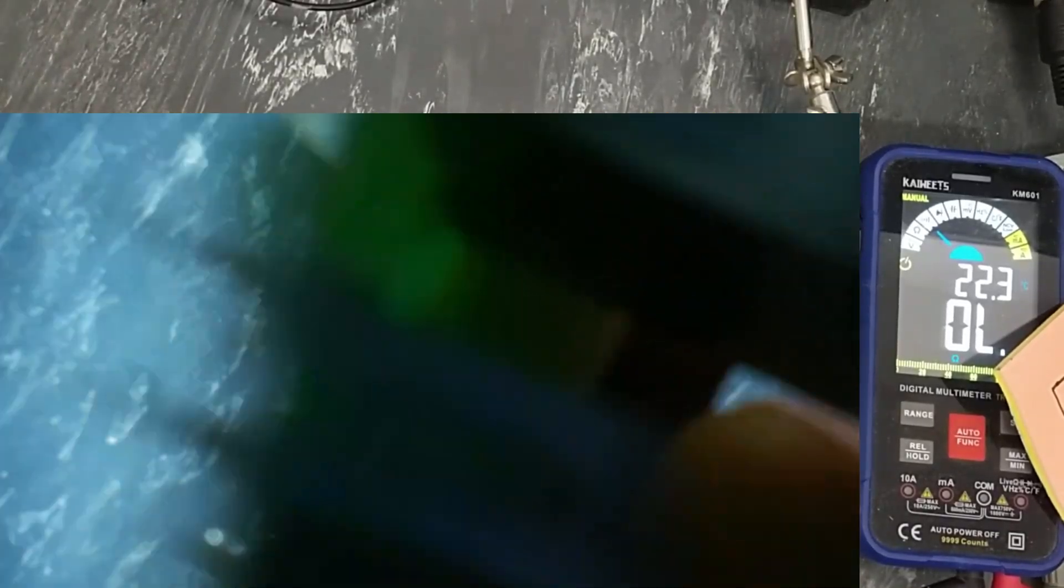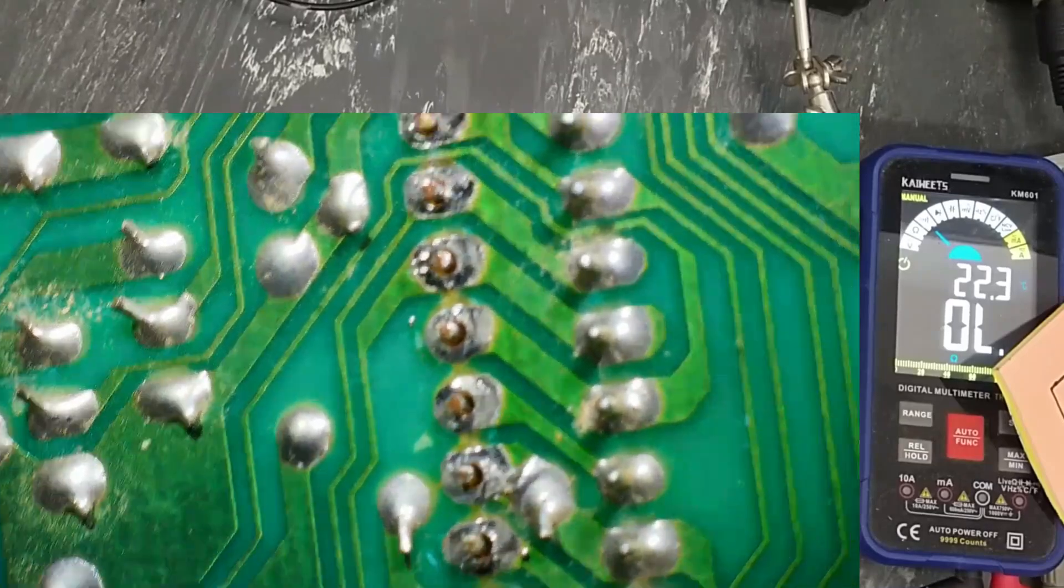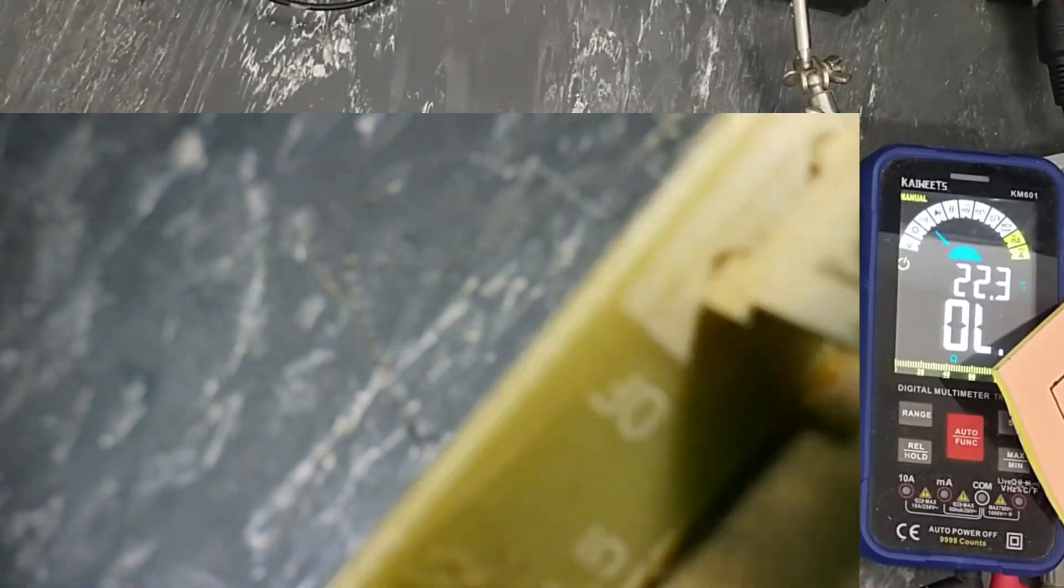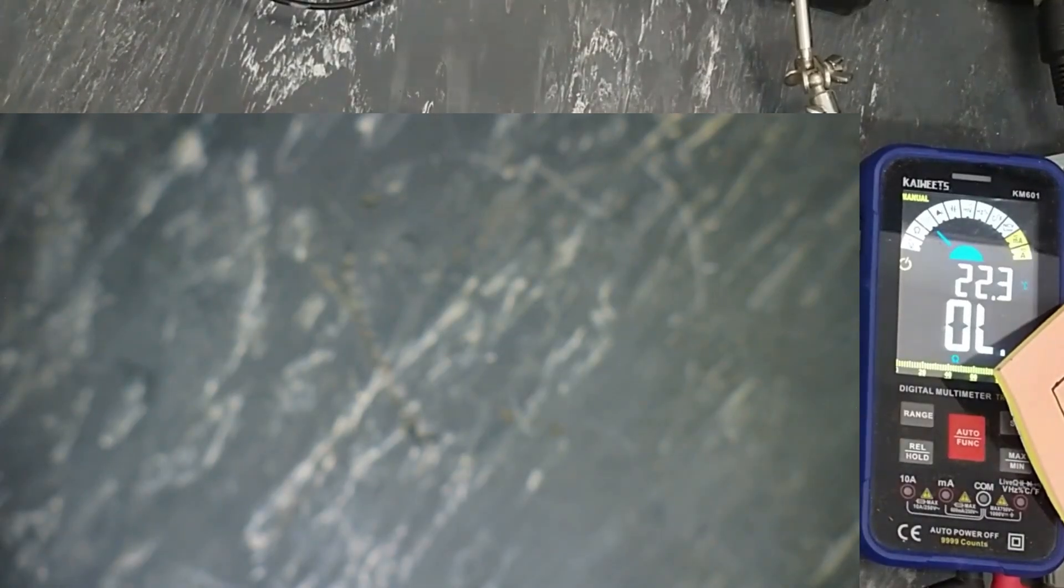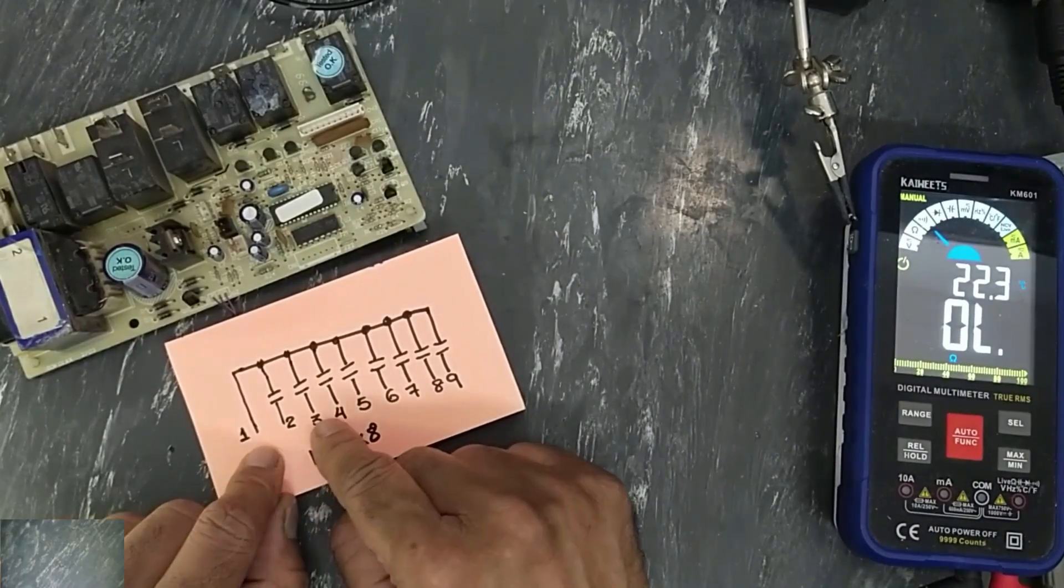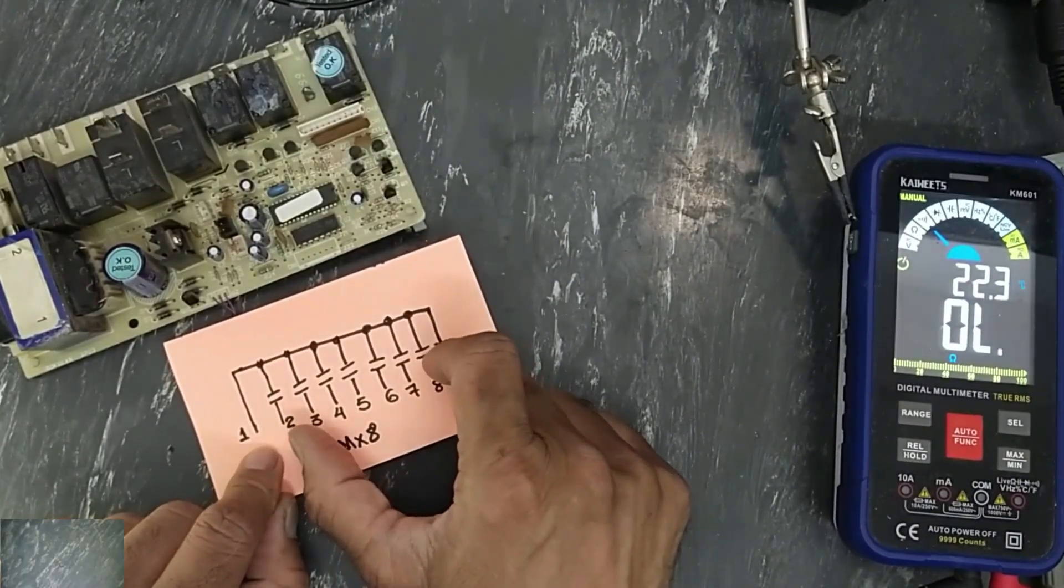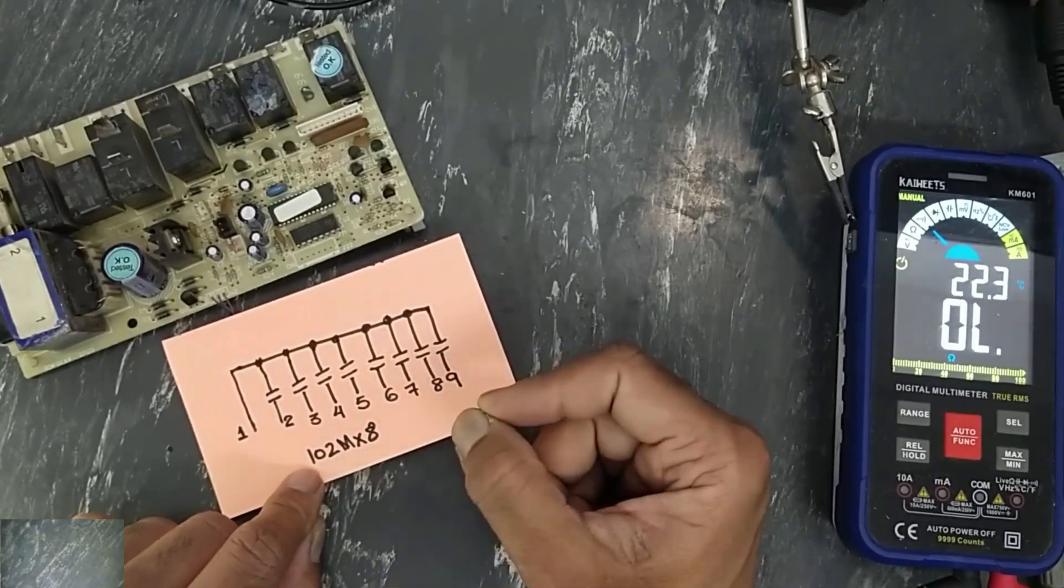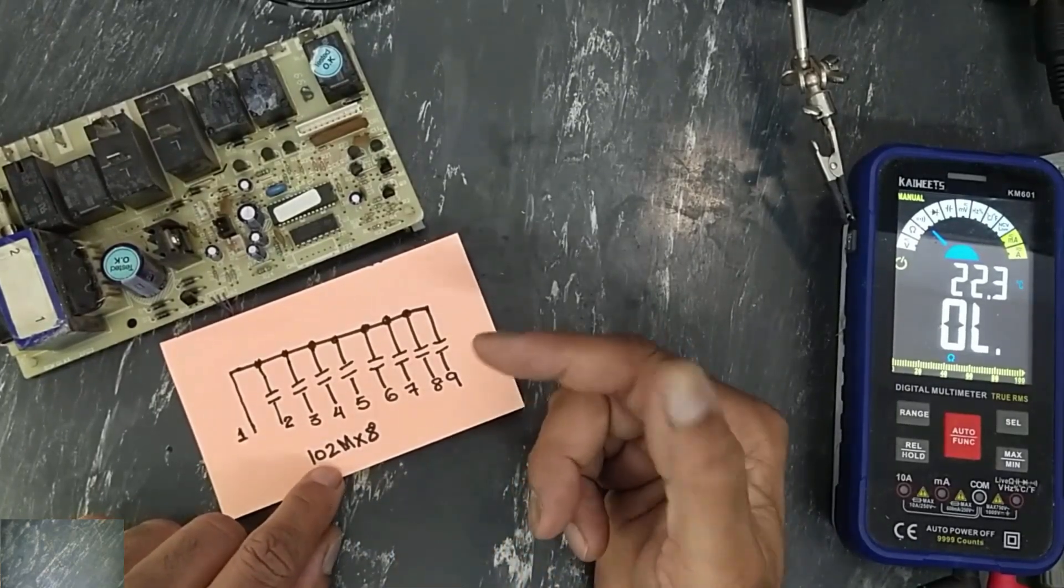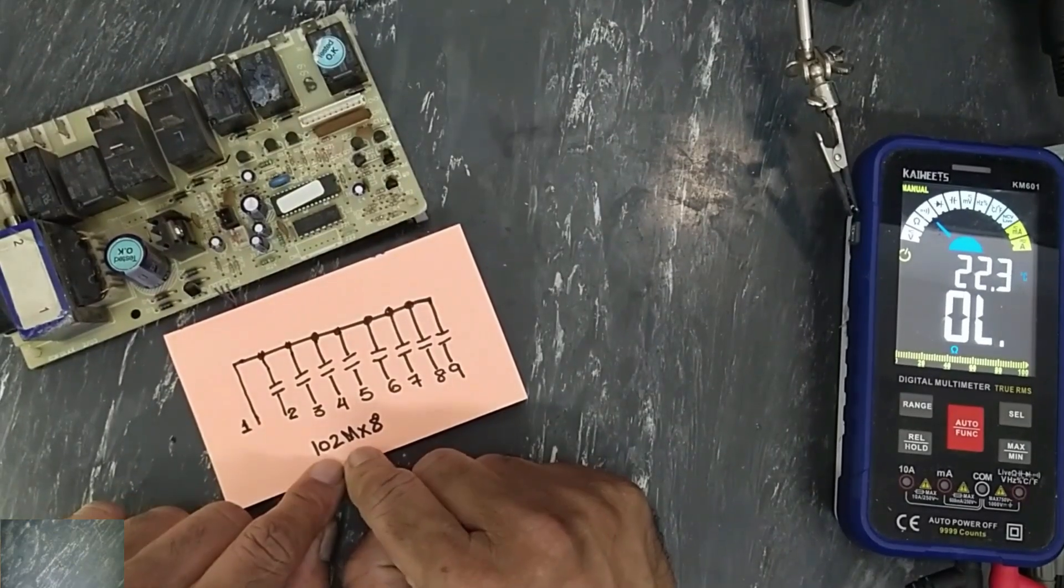Nine pin component that is connected in parallel to the display connector. Let's see what's this. Pin one is common, eight capacitors in one network. Each capacitor 102, that means 1000 picofarad or one nanofarad. M plus minus 20 percent.